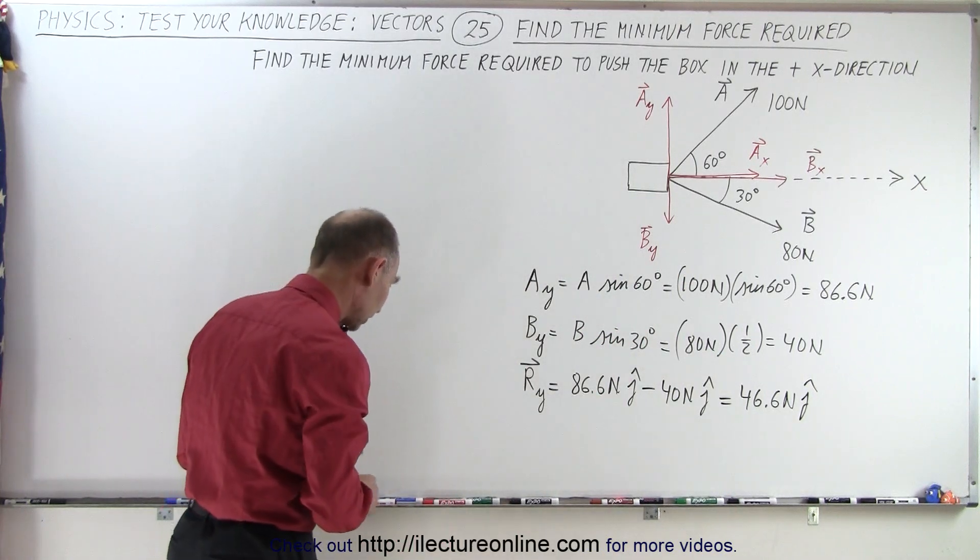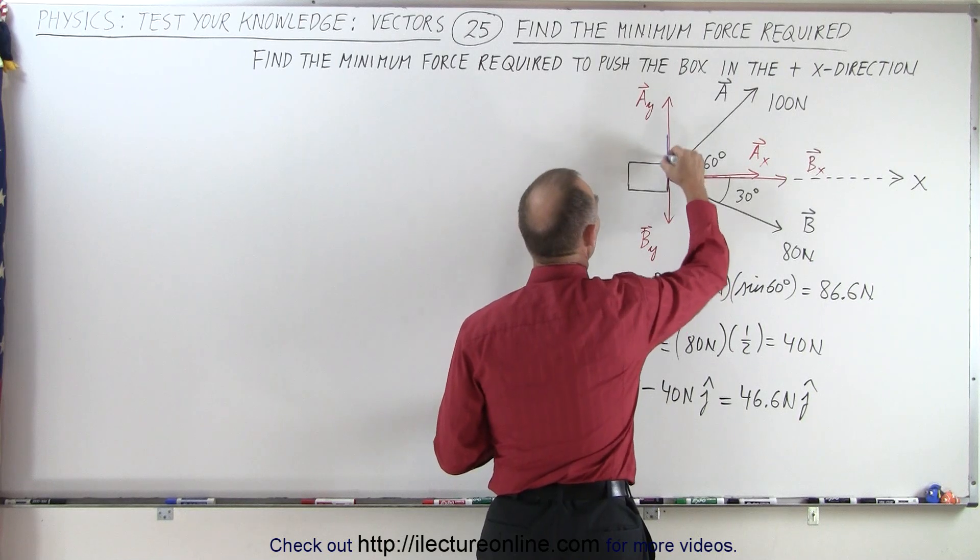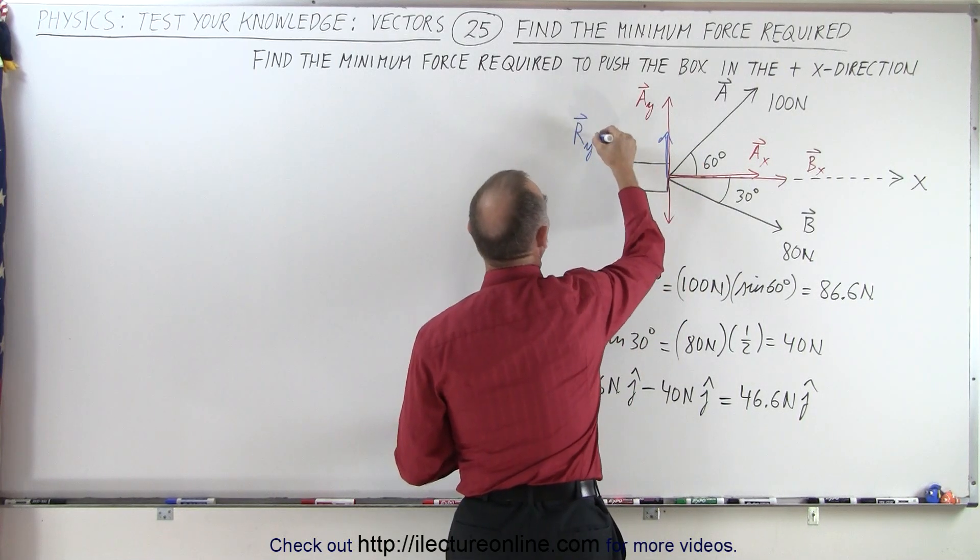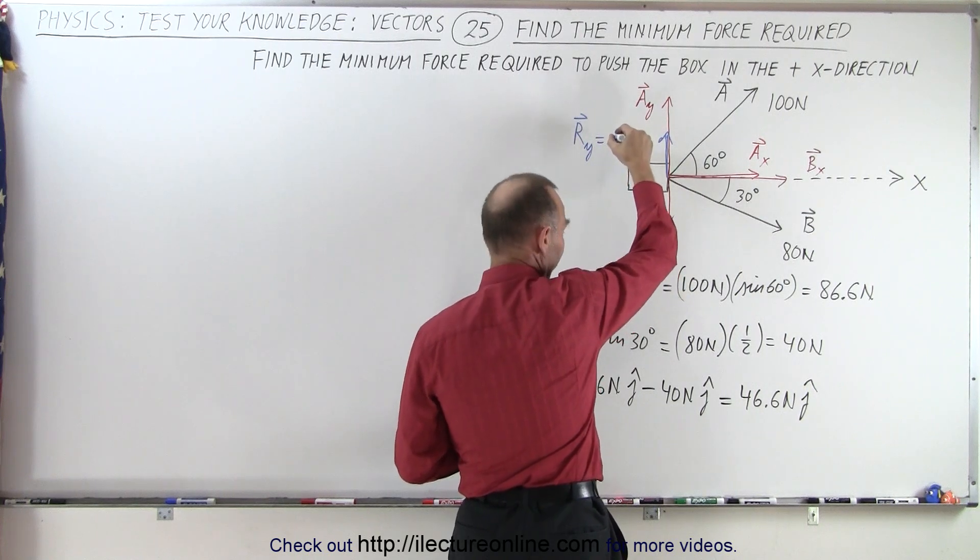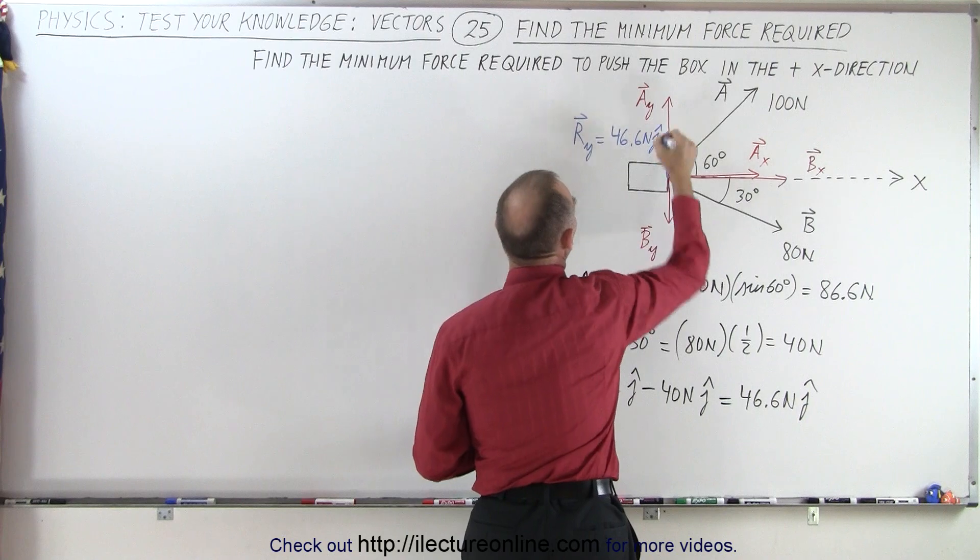So let's take a different color. We can see that the net force, r in y direction, is going to be equal to a positive 46.6 newtons in the j direction.